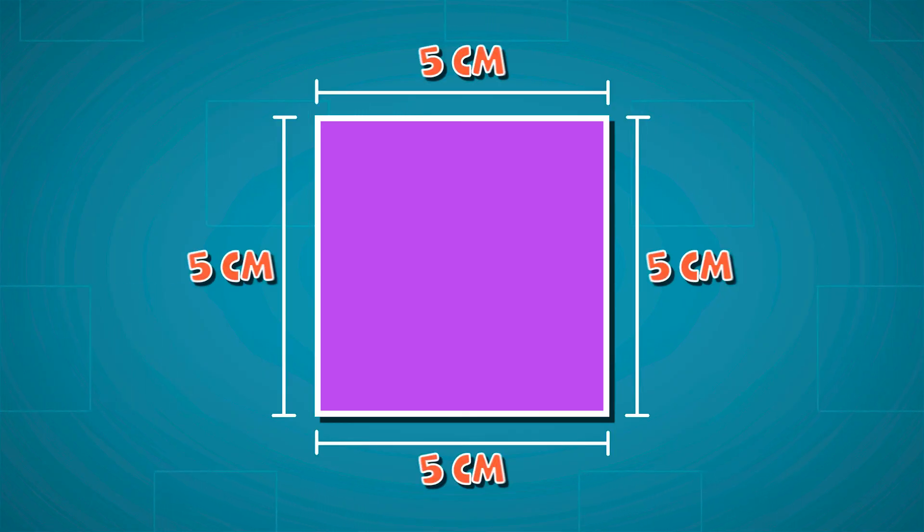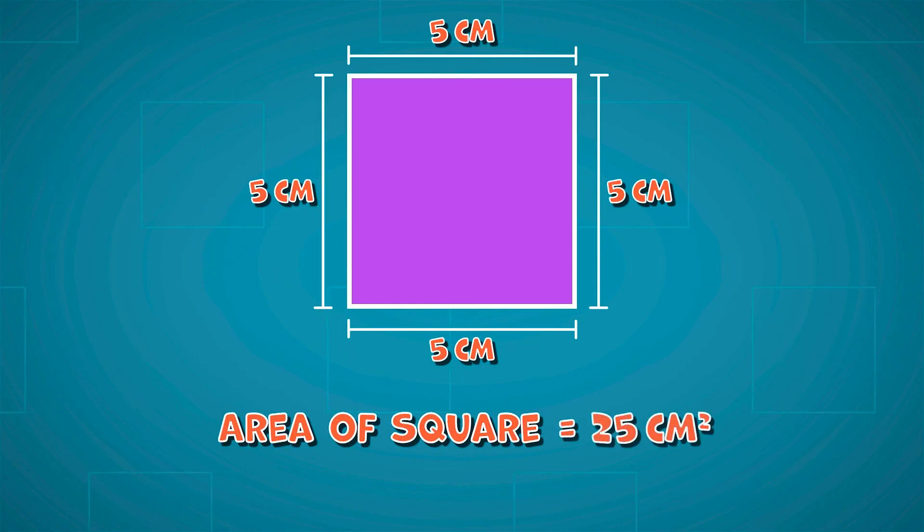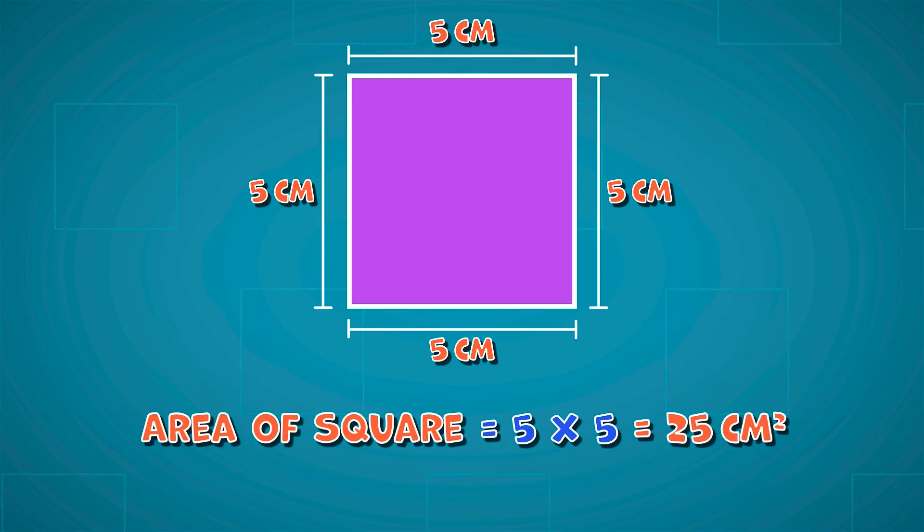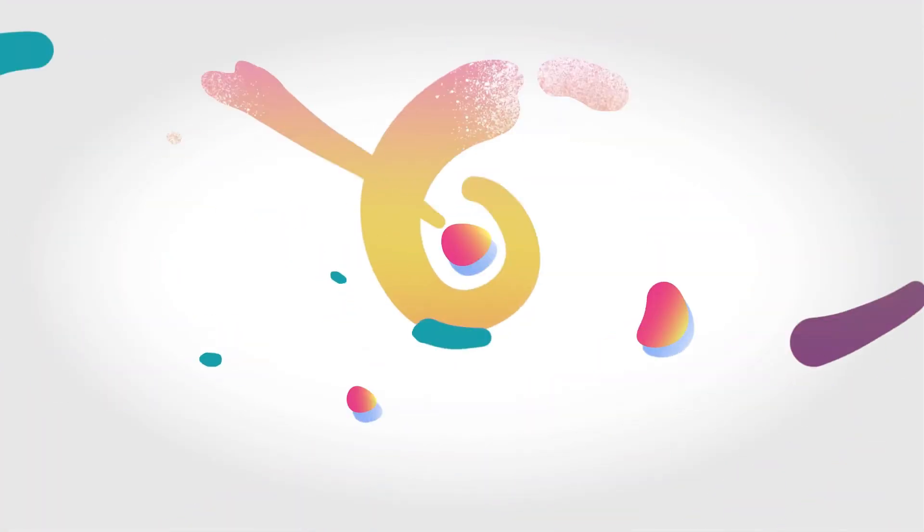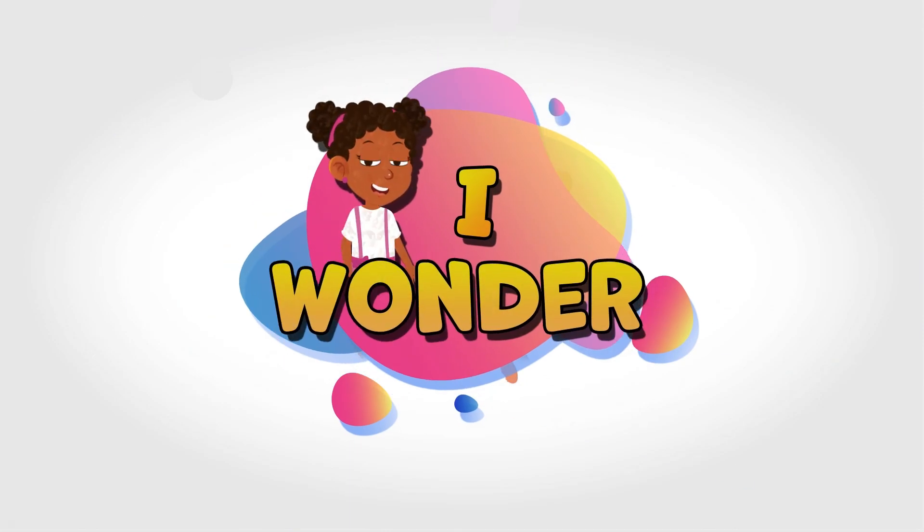To get the area of a square, you must multiply two sides of the square together. If all the sides of a square are 5 centimeters, then the area of the square will be 25 centimeters squared, because 5 times 5 is 25.